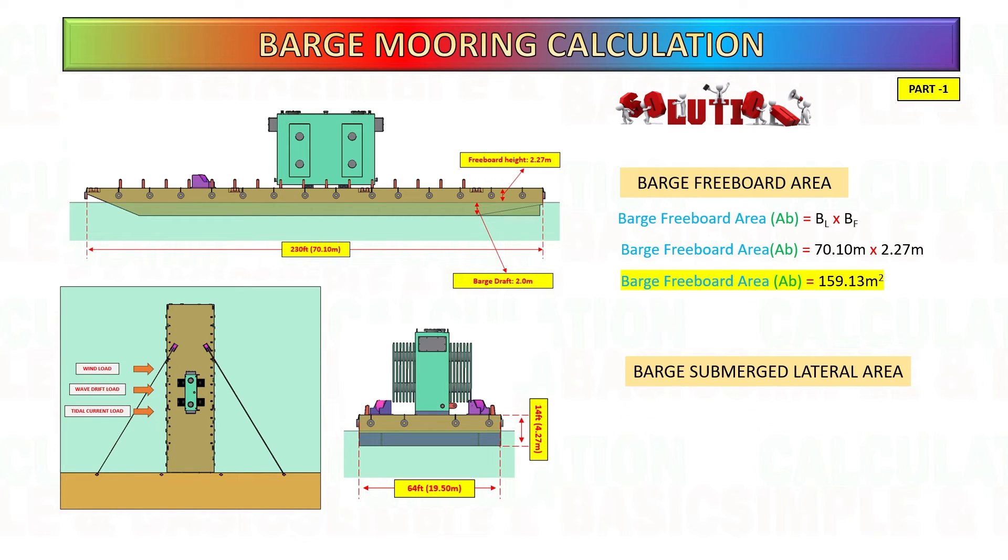Next, calculate the submerged lateral area of barge. Multiply the barge overall length to barge draft. For easy calculation, I consider the barge's rectangle surface.